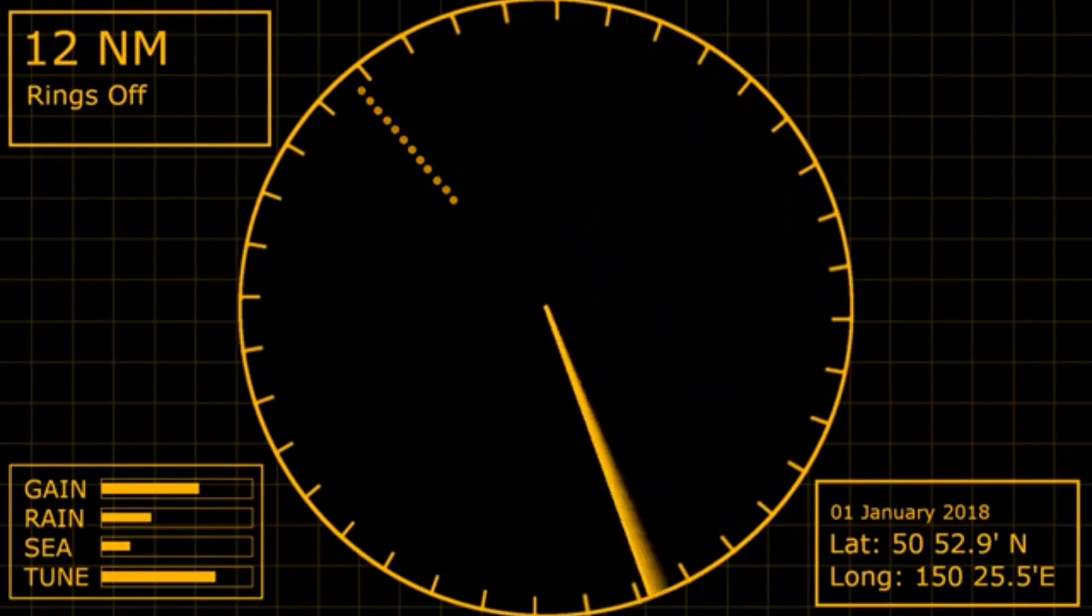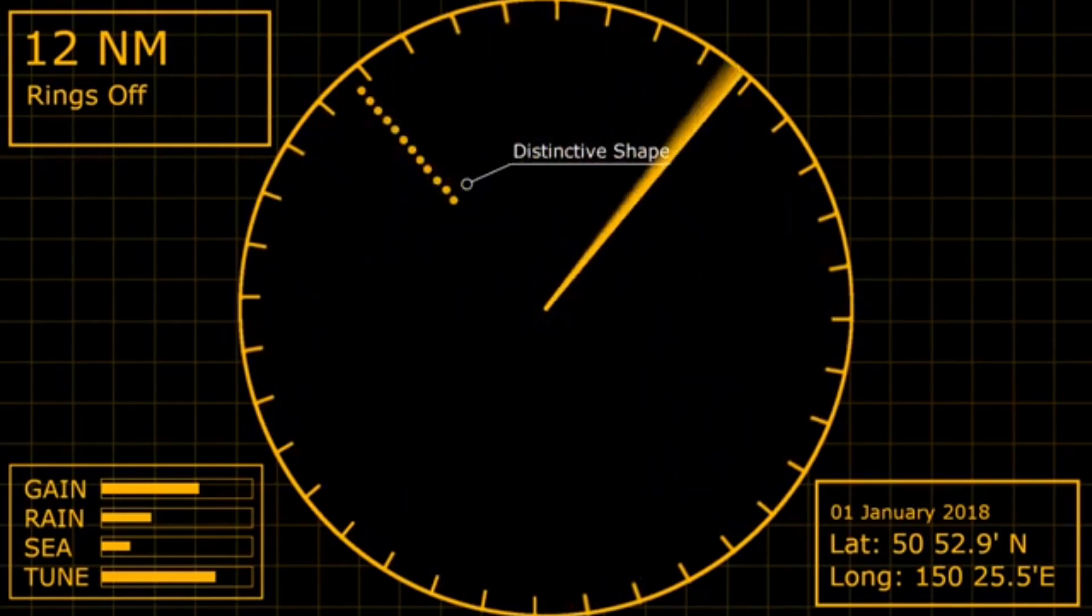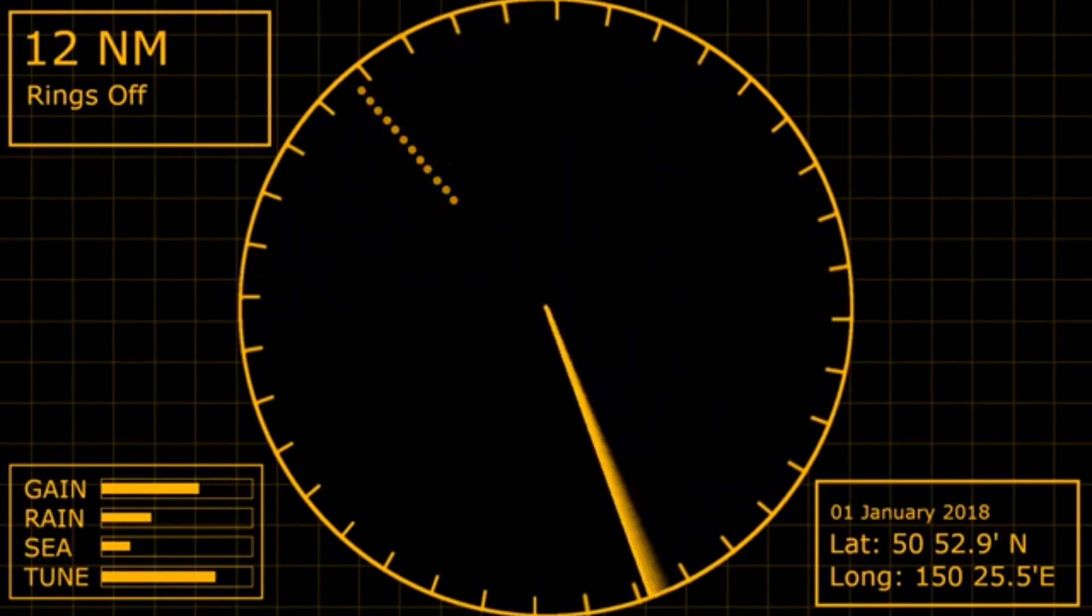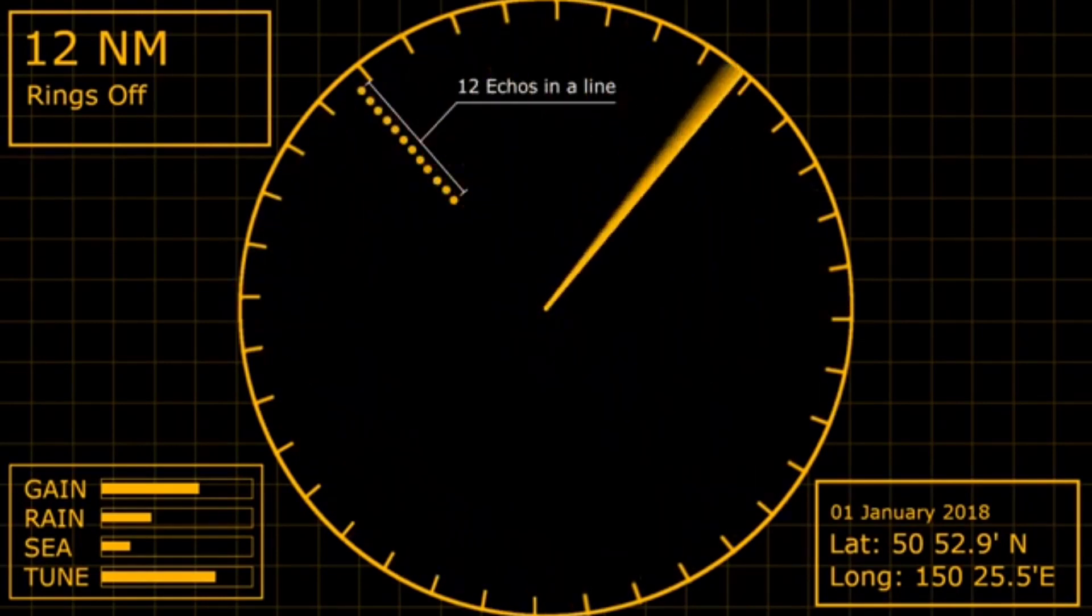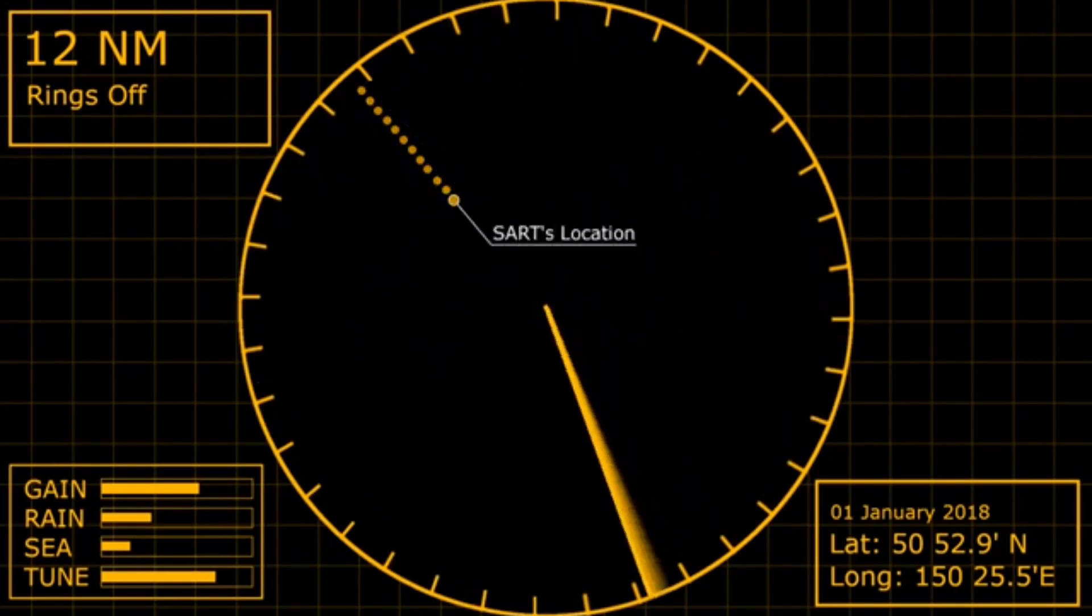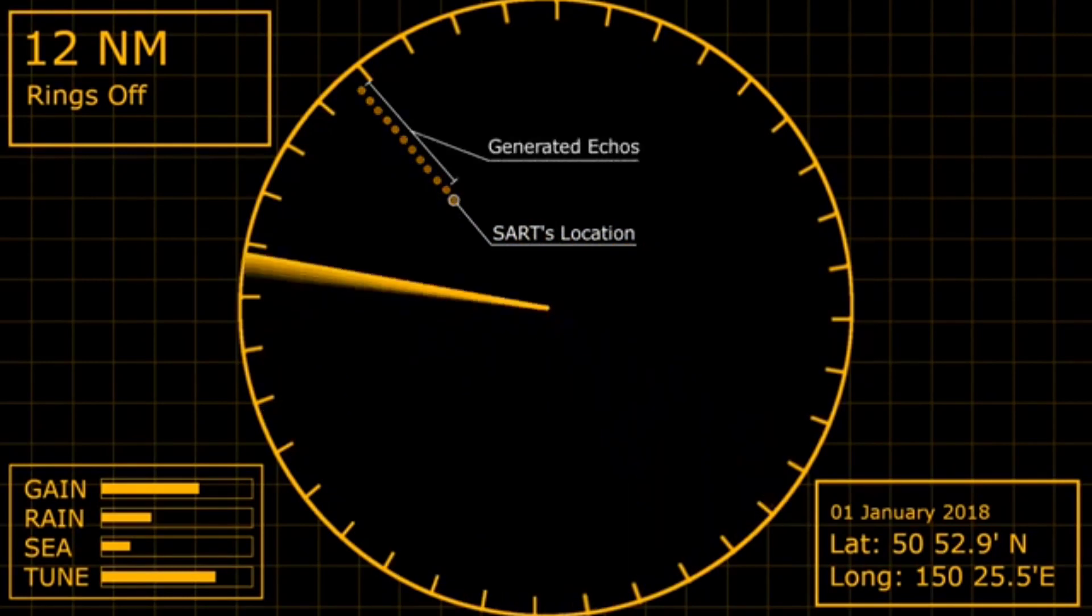For the approaching vessel, the first sign that there's a SART operating is the characteristic dots on their radar screen. At long range, these show as 12 dots in a line, originating from the SART's location. The first return is the SART itself, and the further dots are the extra echoes generated by the SART.